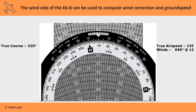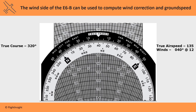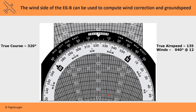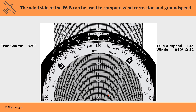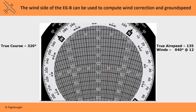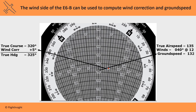First, line up the wind direction of 40 degrees under the true index and make a mark for the wind speed. The wind is 12 knots, so we'll put the mark 12 knots above the center hole. Next, spin the wheel so that the true course of 320 is under the true index. We'll then slide the wheel up so that the red mark we made for wind speed lies on the airspeed mark of 135 knots. We can read the wind correction from how far to the right the mark is from the center line. That mark is 5 degrees right, meaning we'll need a 5 degree wind correction to the right. If we add that to the true course, we get the true heading of 325 degrees. We can also read the ground speed from the center hole, about 132 knots.